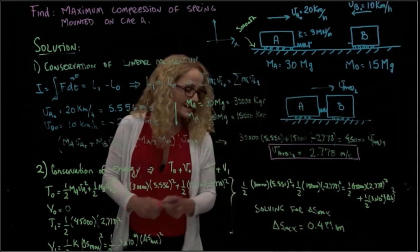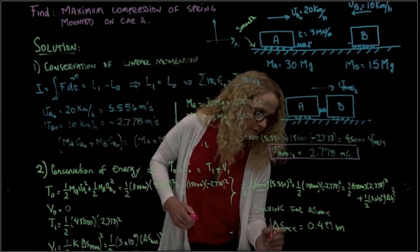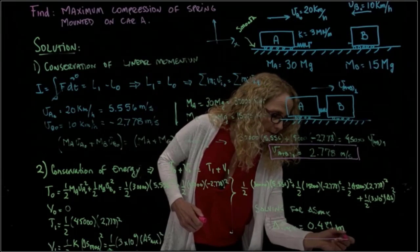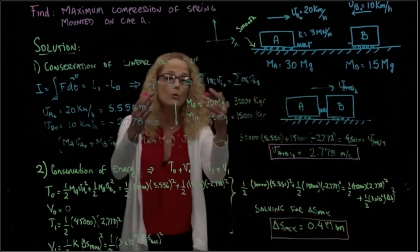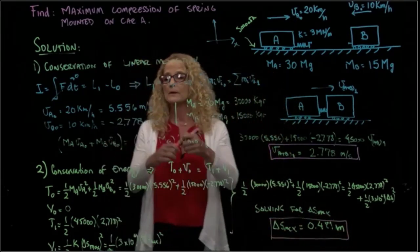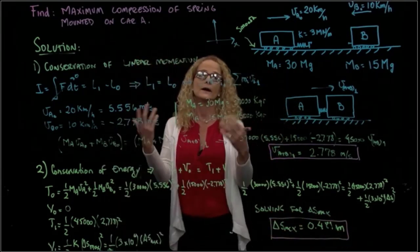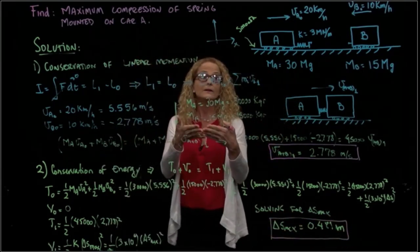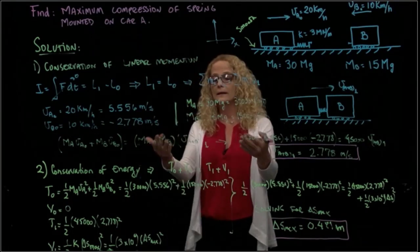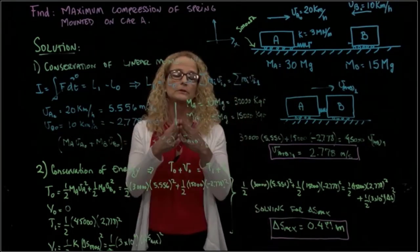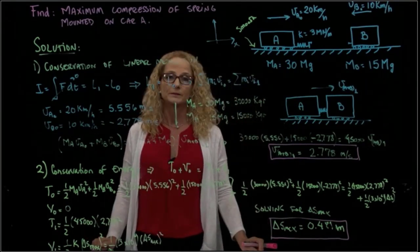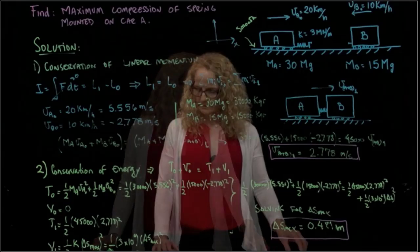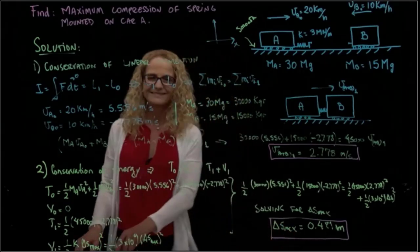That's the answer we're looking for. This problem had two steps: first, finding the final velocity using conservation of linear momentum; then, finding the maximum compression of the spring using conservation of energy. This is it.